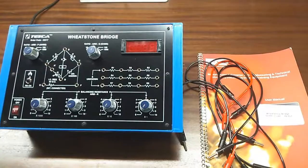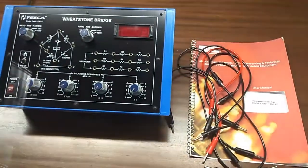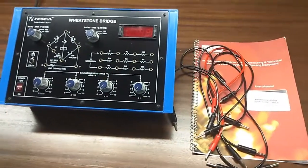Today, we are going to show you our Wheatstone bridge trainer kit, order code is 36317.